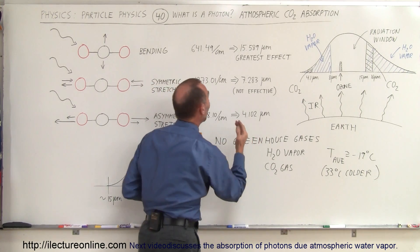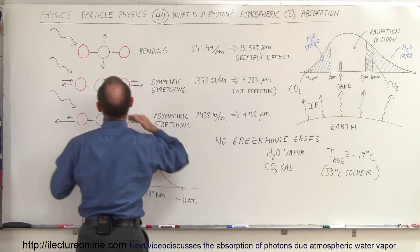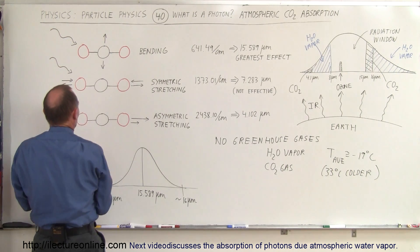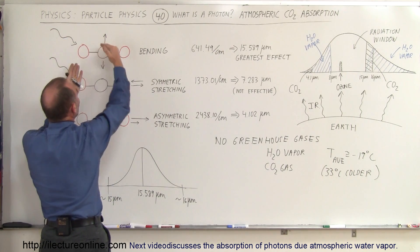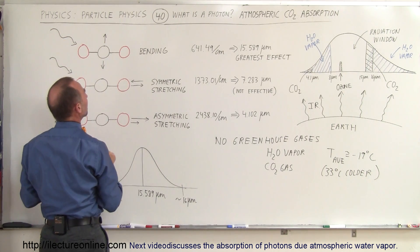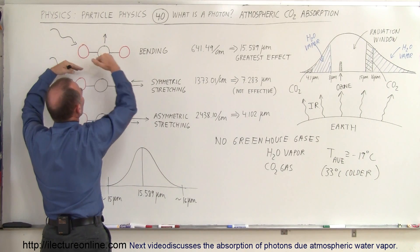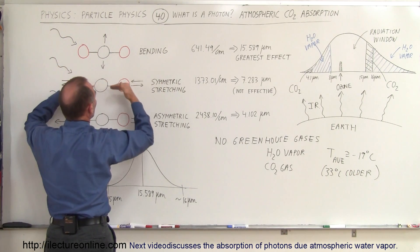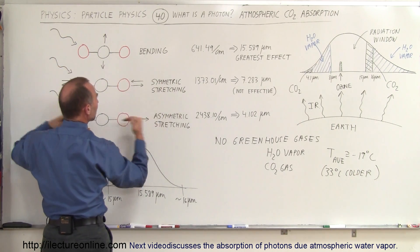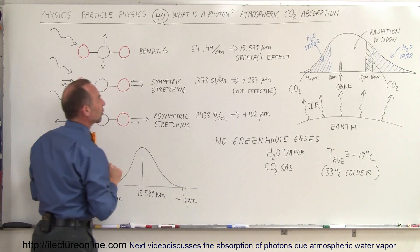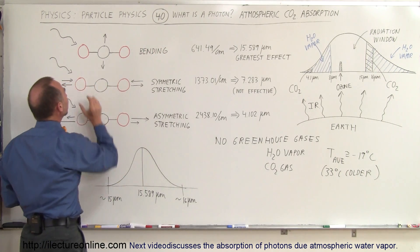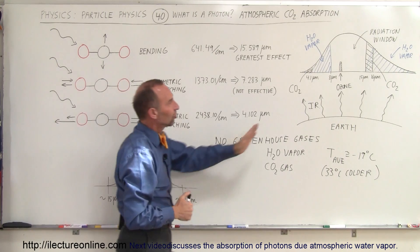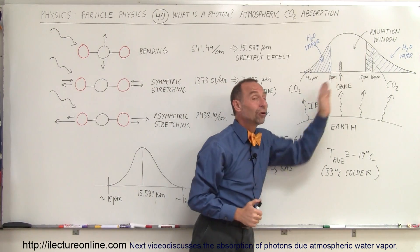Radiation coming back up from the Earth hits these carbon dioxide molecules. When the energy is absorbed, it causes the bending, the symmetric stretching, and the asymmetric stretching — which absorbs energy from the Earth, but only in those very narrow frequency bands illustrated here.